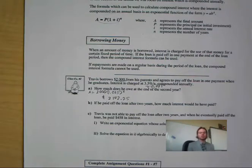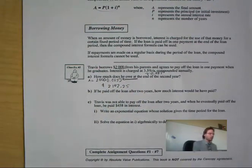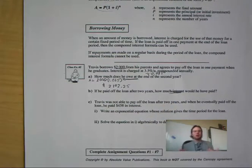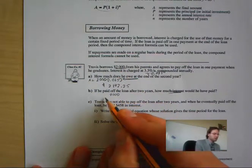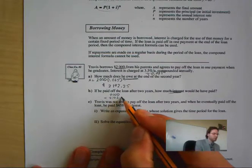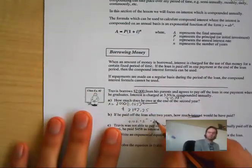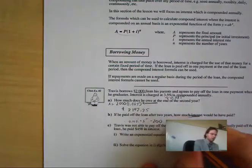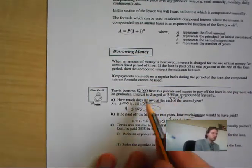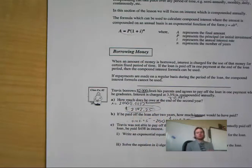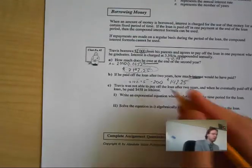Now it says: if he paid off the loan after two years, how much interest would he have paid? This total is how much he owes. We are only looking at the extra amount of money. So we have $2,142.25 and we subtract $2,000, which gives me $142.25. We want to know how much he owed originally compared to how much he owes now after interest — subtract to figure out how much he paid in interest only.